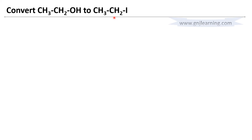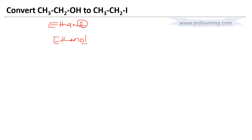The first question is to convert ethanol into iodoethane. Ethanol is a two-carbon compound — its hydrocarbon is named ethane. When alcohol is the functional group, the OH group is called alcohol. To name it, you replace the last letter 'e' of ethane with 'ol' from alcohol, giving ethanol. So the question is: convert ethanol into iodoethane.